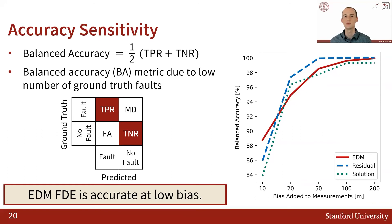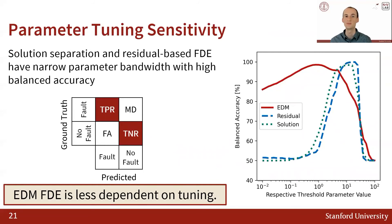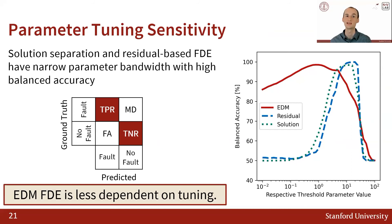We see that not only does EDM-based FDE rival the accuracy of residual-based and solution separation FDE when the added bias is large, but it even performs more accurately than residual-based and solution separation when smaller biases are added to the measurements. Using our clean dataset with 50-meter biases added, we calculated the balanced accuracy as we stepped across a large range of thresholding parameters for each FDE method. The plot shows that while residual-based and solution separation FDE have a narrow band of thresholding parameters where they perform well, EDM-based FDE has a much larger range of thresholding values that provide reasonable accuracy, requiring less parameter tuning.